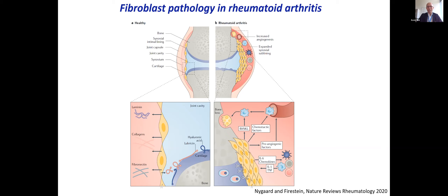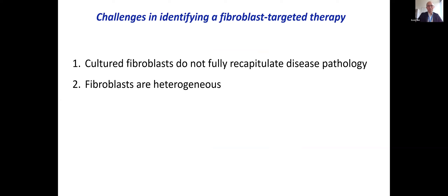Why is that? I think there are many answers, but I'll offer two thoughts. One is that the systems we've used to characterize these cells have predominantly relied on cultured fibroblasts — we take joint tissue, dissociate it, and these fibroblasts stick to a plastic well and expand into a cell line. Most of us know that when you grow cells on a dish, they don't fully recapitulate the native environment, so we lose a lot of the pathological signature associated with them in the native joint.